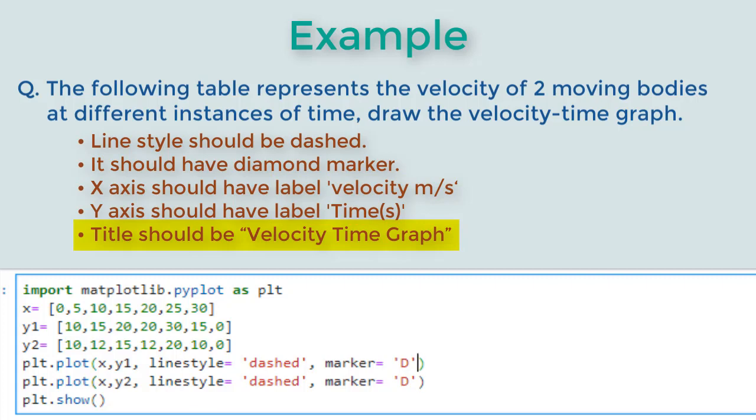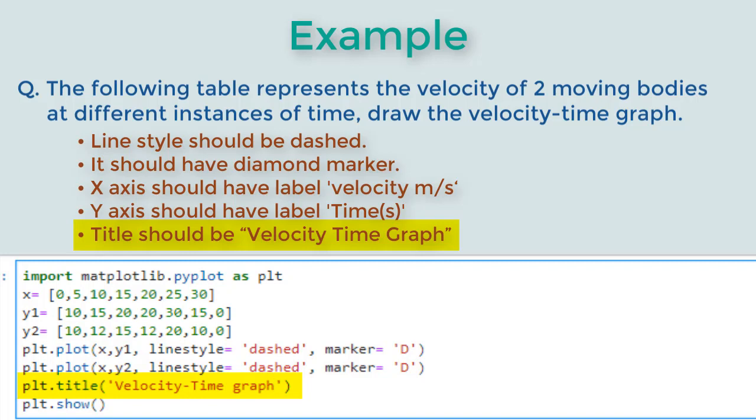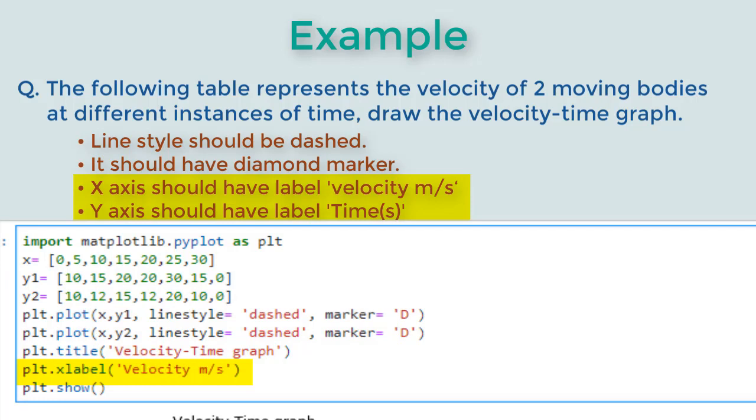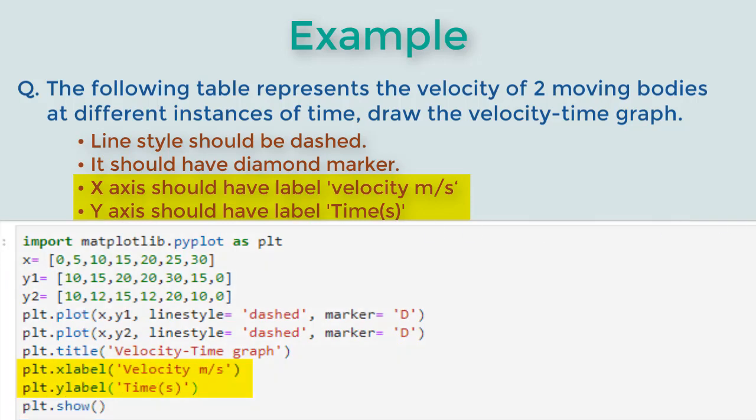First one is title. If you call the plt.title function with a string it will add a title string at the top. Next are x labels and y labels. If you pass a string it can be used to set the x-axis and y-axis labels respectively.